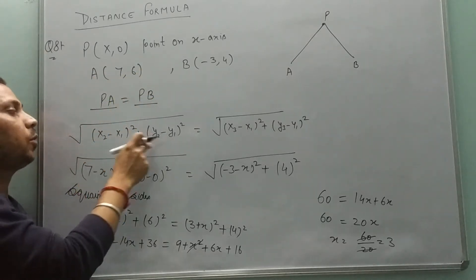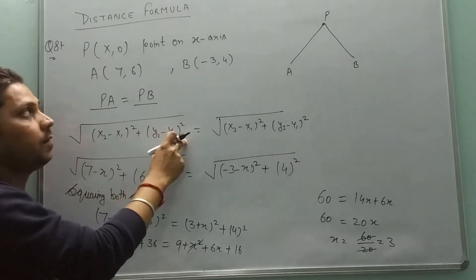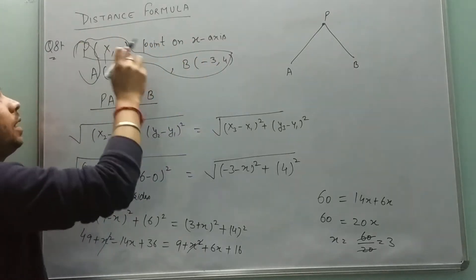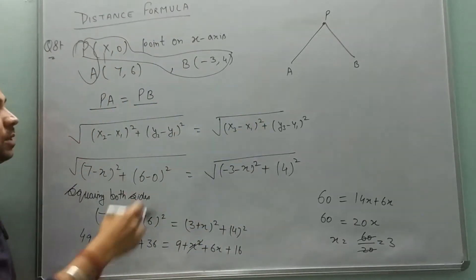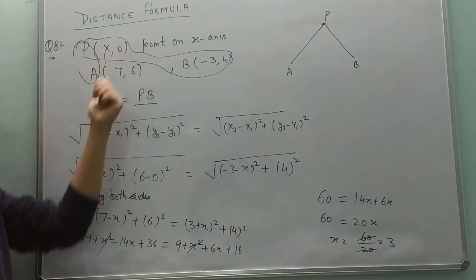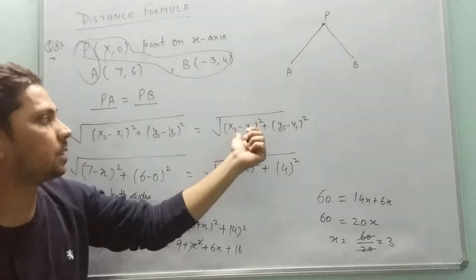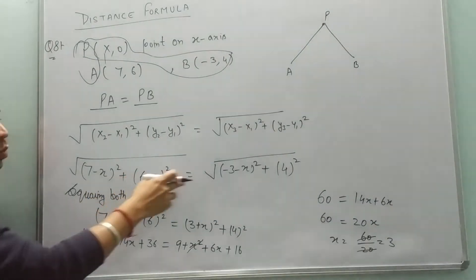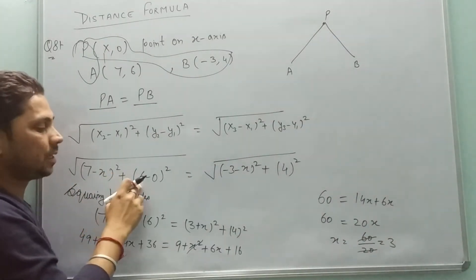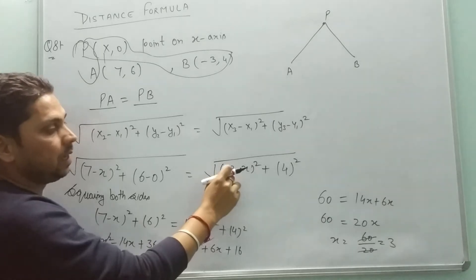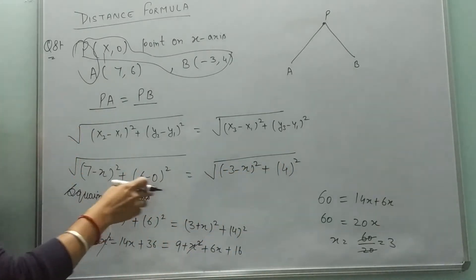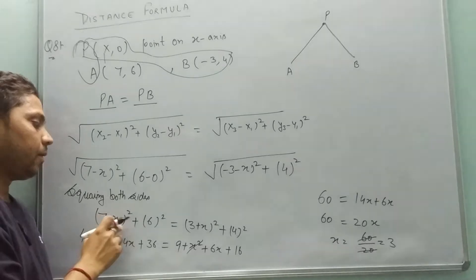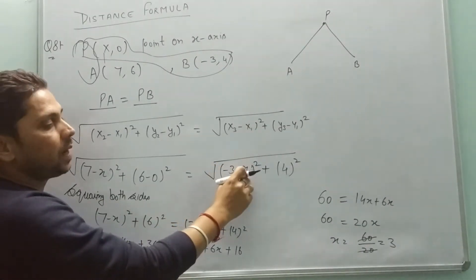Again apply the distance formula twice using (x2 minus x1) plus (y2 minus y1). Substituting values x1, x2, y1, y2, x3, x1, y3, y1, we get: (7 minus x) squared plus (6 minus 0) squared equals (minus 3 minus x) squared plus 4 squared. Squaring both sides removes the square root.